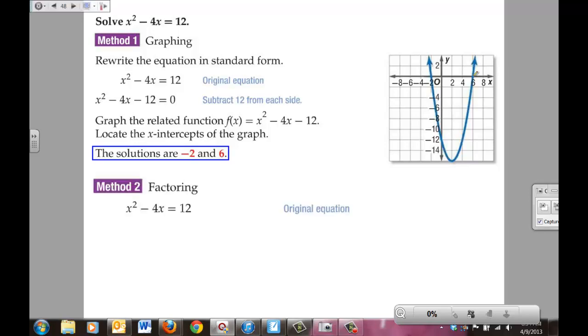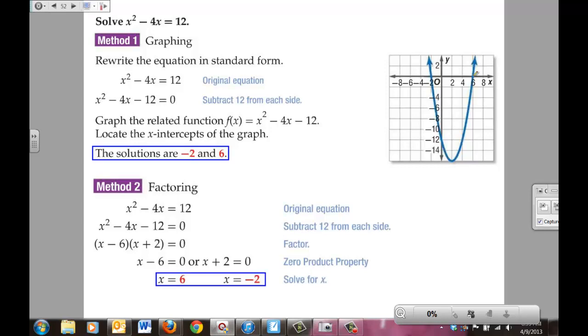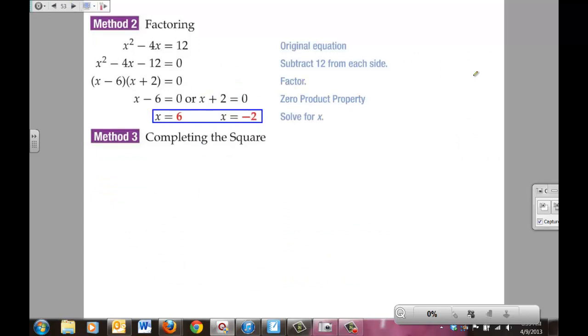You could also take this same exact problem and solve it using factoring. To solve this equation using factoring, we would have taken and placed it in standard form again. And this time, we would have recognized it factors into (x - 6)(x + 2) = 0. And they would have done that by making that table of different factored products and sums that we learned in the last chapter. From there, you would use the zero product rule. Either x - 6 = 0 or x + 2 = 0, finding that once again x is 6 or x is -2.